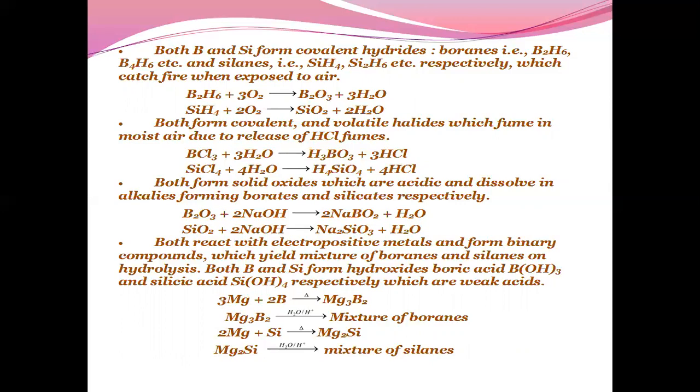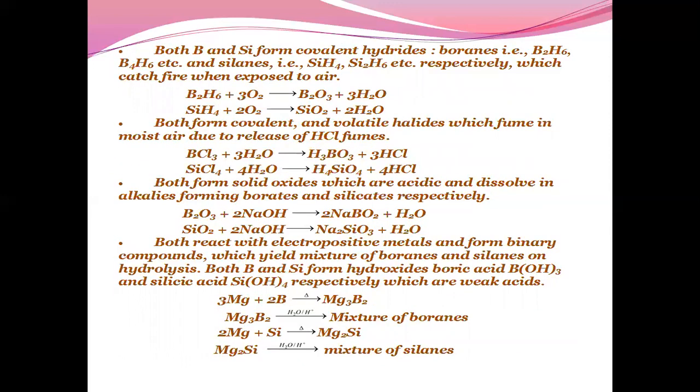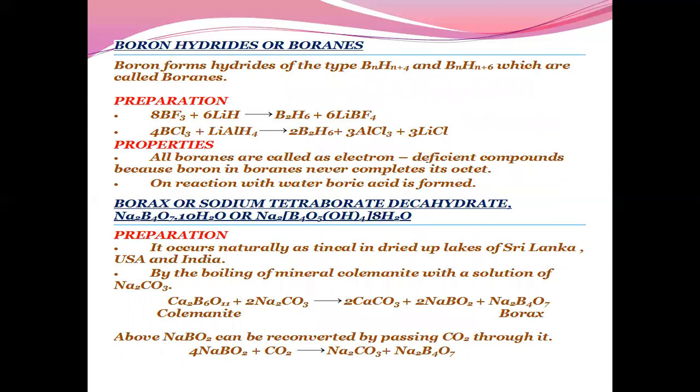Boron hydrides or boranes: Boron forms hydrides of the type BnHn+4 and BnHn+6 which are called boranes. The preparation of diborane has been mentioned. Properties: All boranes are electron deficient compounds because boron in boranes never completes its octet. On reaction with water, boric acid is formed.